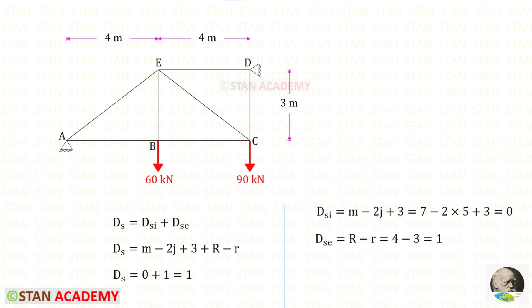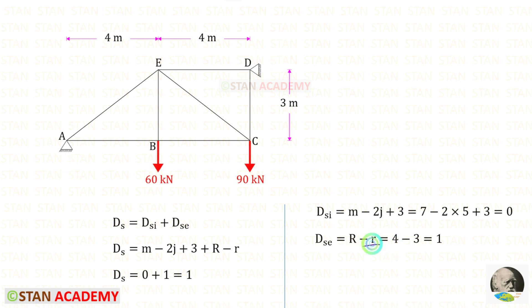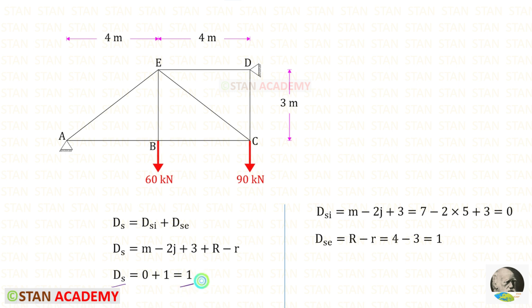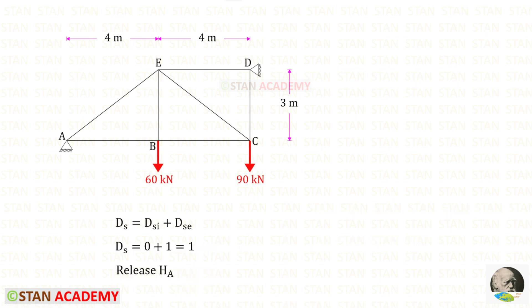To find the external degree of static indeterminacy, this is the formula. r is the number of reactions to be found. At points A and D there are hinged supports, and in hinged supports there will be 2 reactions each, so totally 4. Small r is the available equilibrium conditions — there are 3: sigma V = 0, sigma H = 0, and sigma M = 0. For the external degree of static indeterminacy we get 1. So the total degree of static indeterminacy of the truss is 1, with only external indeterminacy.